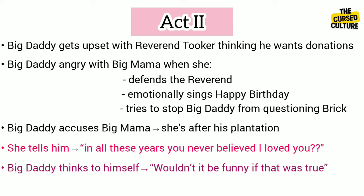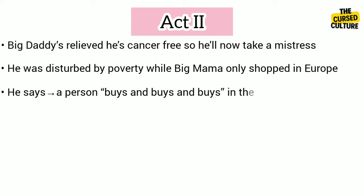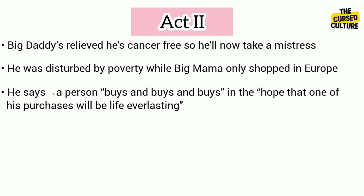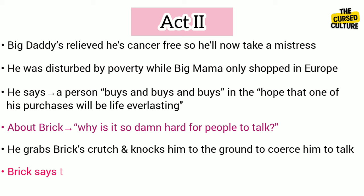Later, Big Daddy asks to speak with Brick alone. He talks about how relieved he is that he doesn't have cancer, so he will now take a mistress. He reminisces how once on a trip to Europe he was disturbed by the starving poor and rampant prostitution while Big Mama only shopped. Big Daddy contemplates that a person buys and buys in the hope that one of his purchases will be life everlasting. He attempts to communicate with Brick about his drinking and asks why it is so damn hard for people to talk, then grabs Brick's crutch and knocks him to the ground to coerce him into revealing the reason behind his alcoholism.